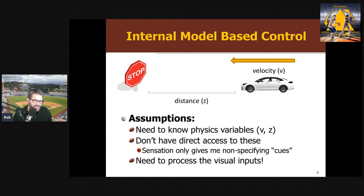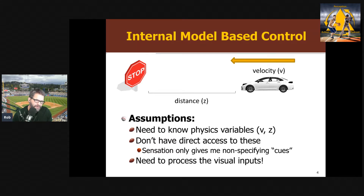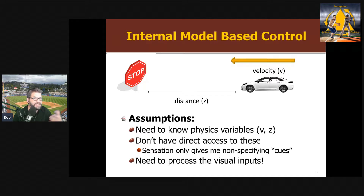The information processing approach assumes we have an internal model in our head - a multi-purpose 3D model of the world we use to calculate positions and movements of objects to make predictions and control our actions. The key assumption is that we need the variables used to describe this problem in physics: distance and velocity. From those, we can compute things - how much time do I have left, the classic V = D/T kind of calculation from physics class. We understand the world the same way a physicist does.